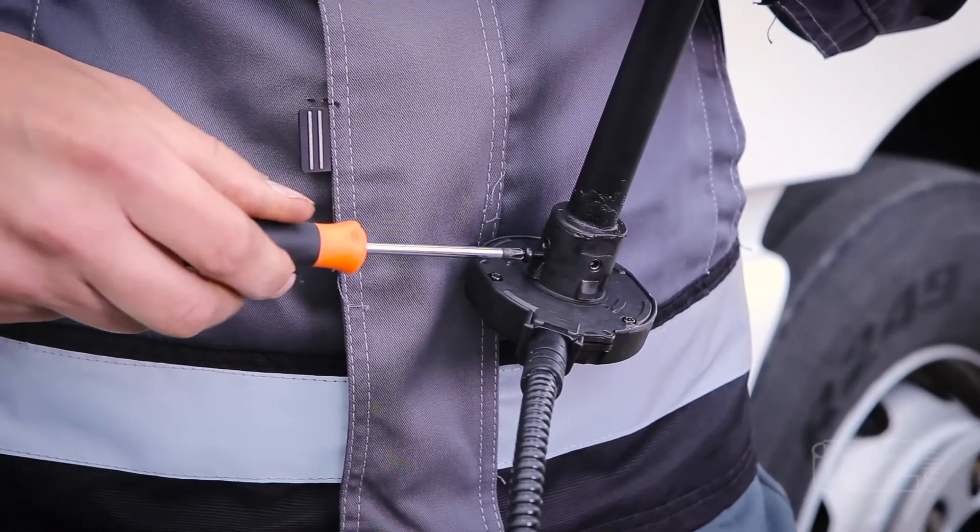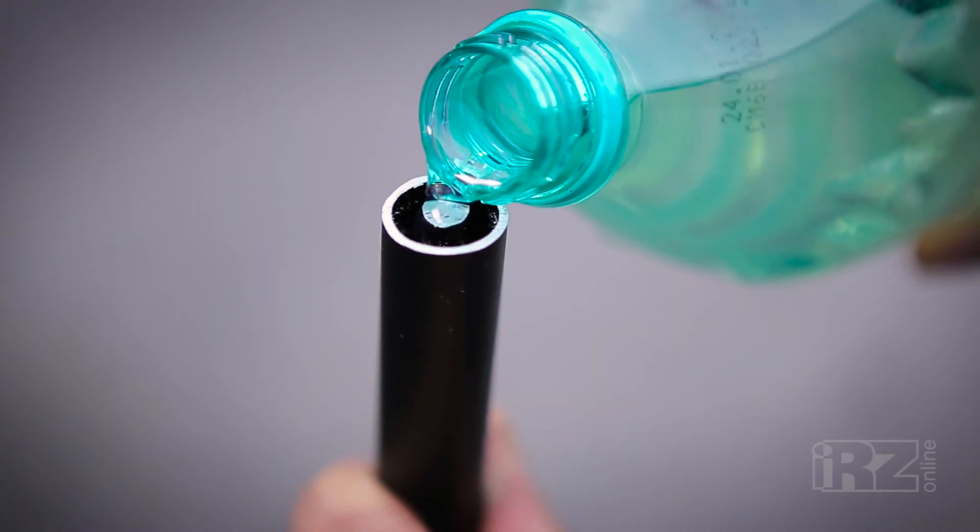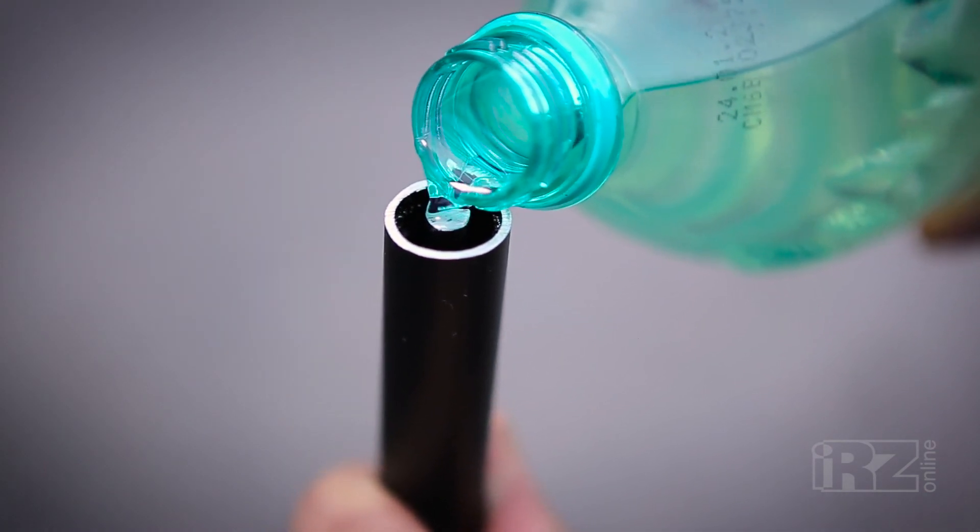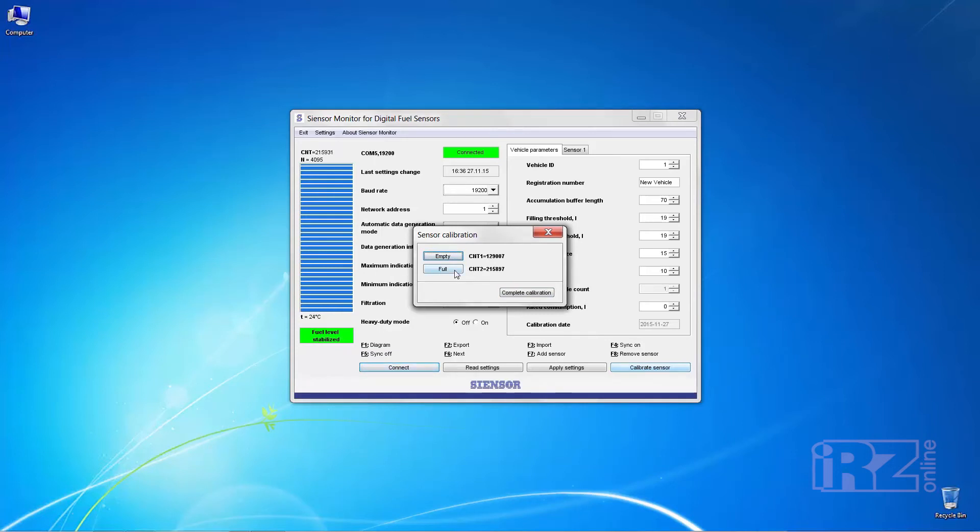Preliminarily, you should screw the supplied bolt in the drain port. Then fuel is poured into the probe. When the inscription stable level appears at the main window, you have to press sensor calibration. In the window sensor calibration you should press full. The value is fixed. Then fuel is completely drained from the probe. Drain port is open. When the inscription stable level appears at the main window, you should press empty in the window sensor calibration. Calibration completed.